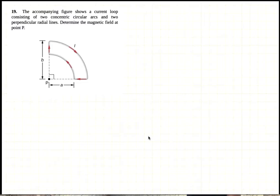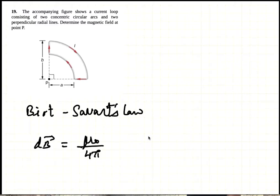So we will use Biot-Savart's law, which says the magnetic field due to a current element is given by μ₀/4π times I ds cross r̂ over r squared.